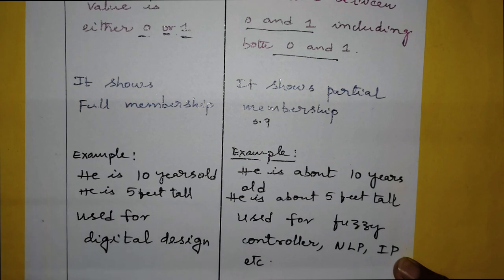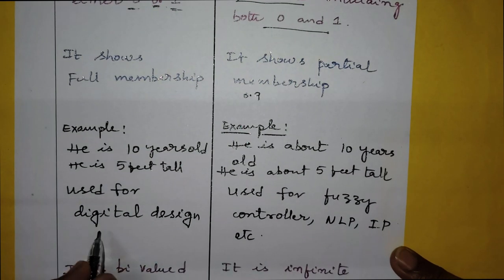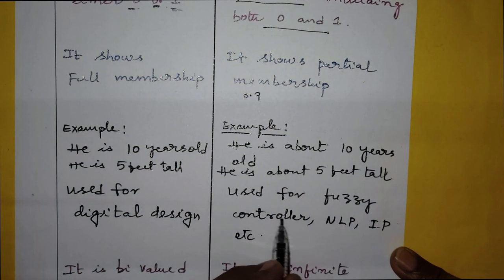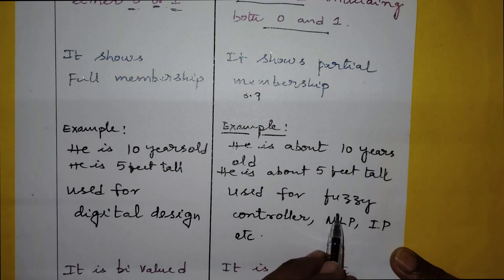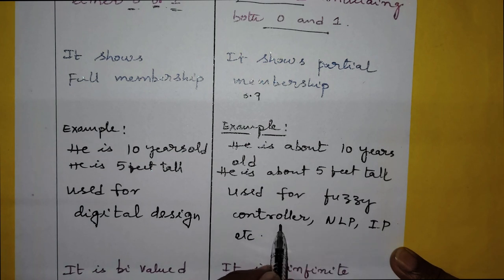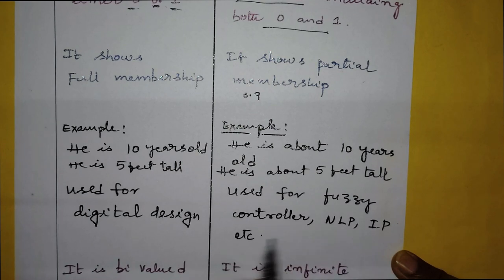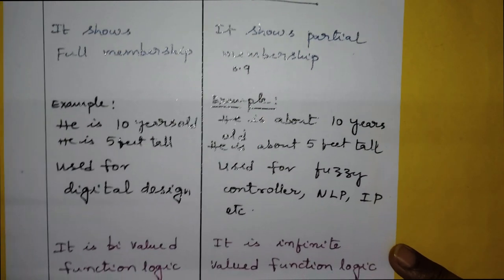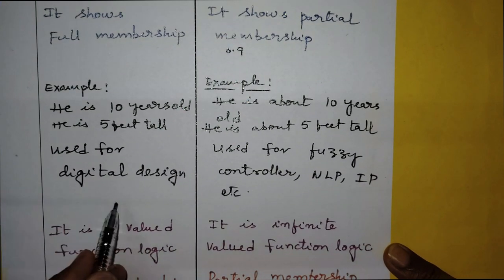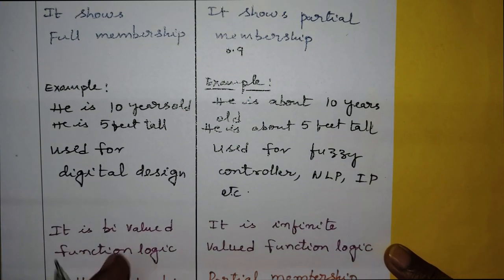Crisp set examples apply to digital design, whereas fuzzy set examples apply to fuzzy controllers, NLP (natural language processing), image processing, and more.